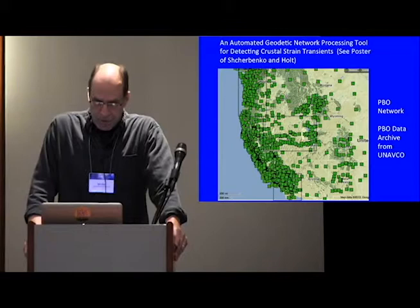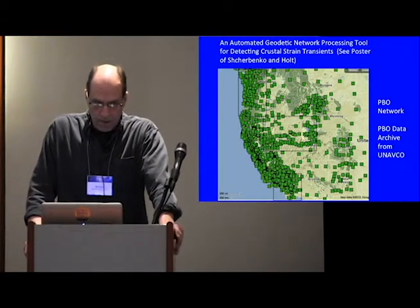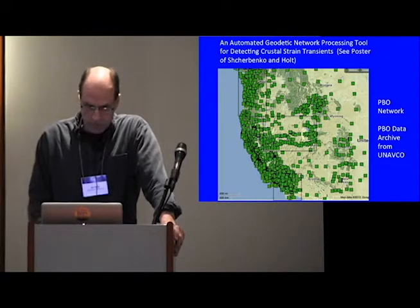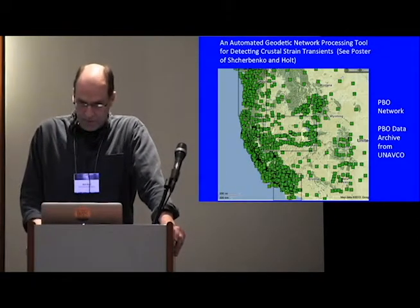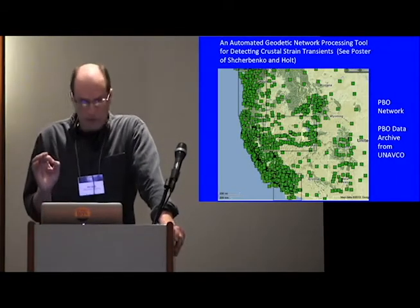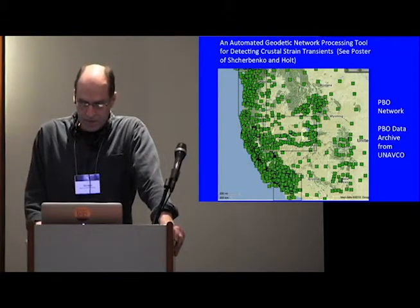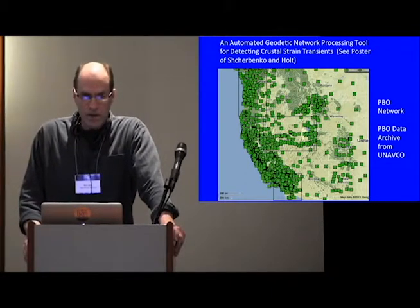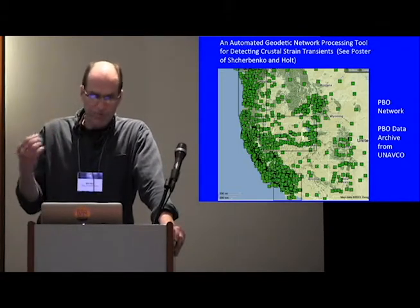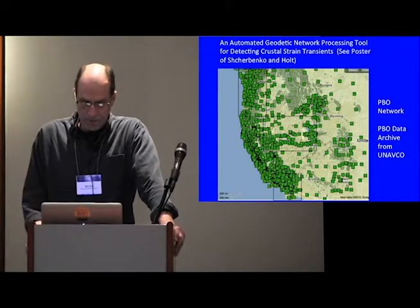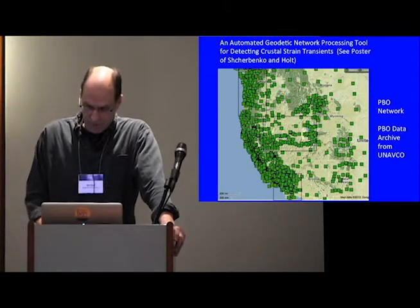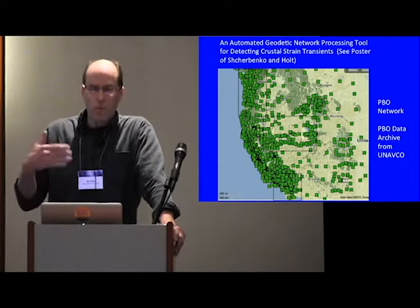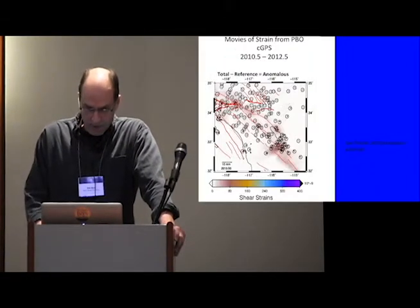This is an outreach part of what's also research that we're doing with SCEC that we're providing a tool that is an automated geodetic network processing tool designed to detect statistically significant crustal strain transients. We remove the seasonal estimates from these GPS signals, and then we apply a filter to them and model the displacement field as a function of time using finite element type models. We then subtract from these estimates of displacement and strain a reference model, and then test whether it's statistically significant from what we interpret to be a steady state feature.